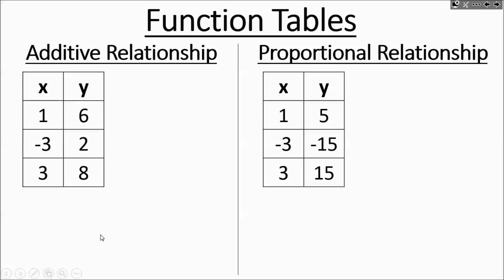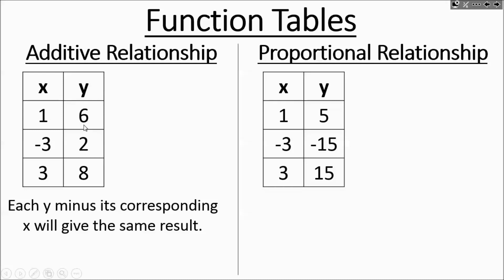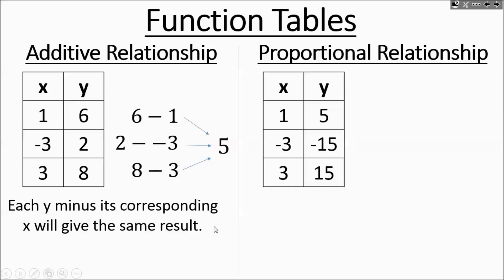For additive relationships, if you take each y and subtract its corresponding x, you're going to get the same number for each ordered pair. So: 6 minus 1, 2 minus negative 3, and 8 minus 3. If you understand integer concepts, 2 minus negative 3 really means 2 plus 3. They all work out to 5. So essentially we're adding 5 to every x value to get the y value, and the equation is y equals x plus 5.